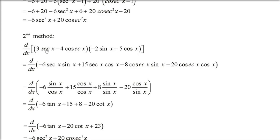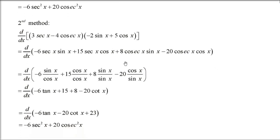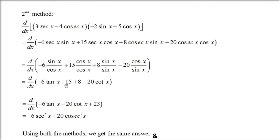Using the direct multiplication method: expand (3secx − 4cosecx)(−2sinx + 5cosx). We get: −6secx·sinx + 15secx·cosx + 8cosecx·sinx − 20cosecx·cosx. Since secx·cosx = 1, secx·sinx = tanx, cosecx·sinx = 1, cosecx·cosx = cotx, this simplifies to −6tanx + 15 + 8 − 20cotx = −6tanx − 20cotx + 23.